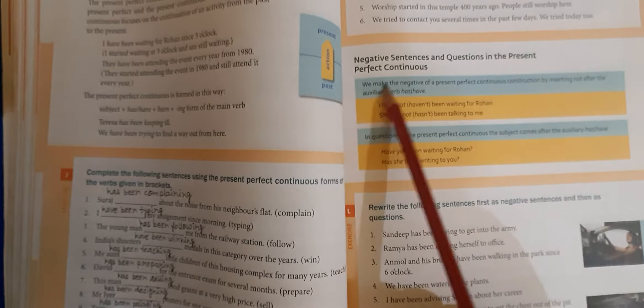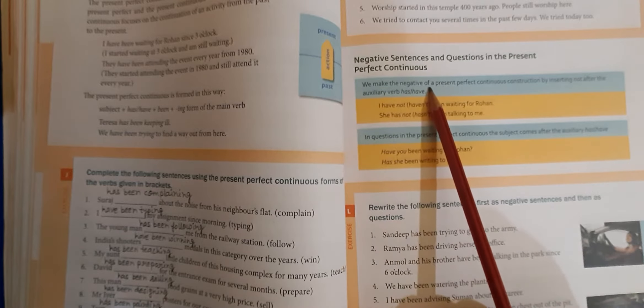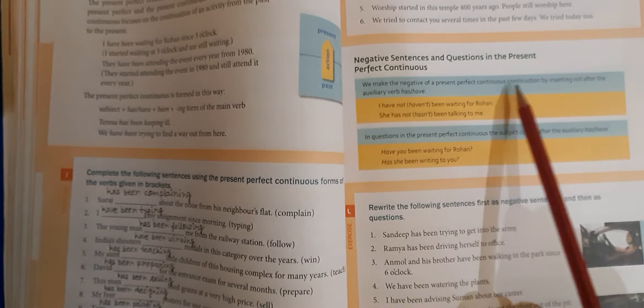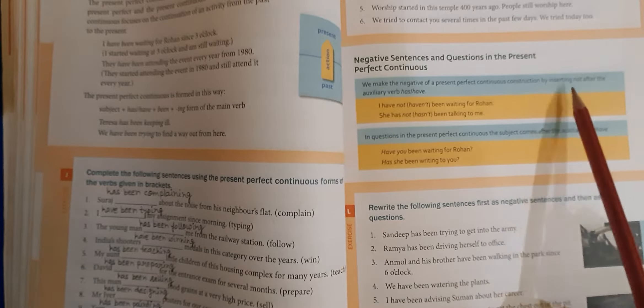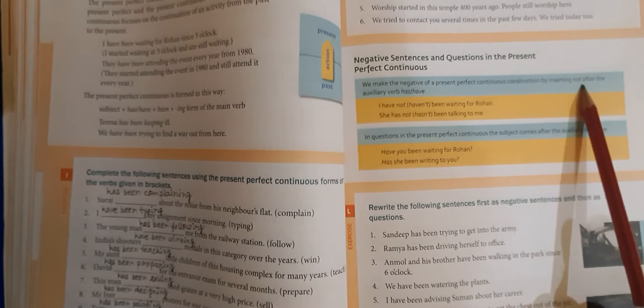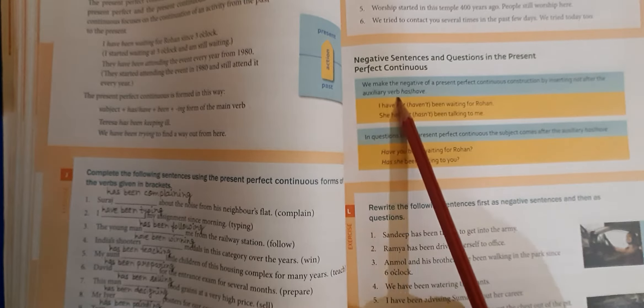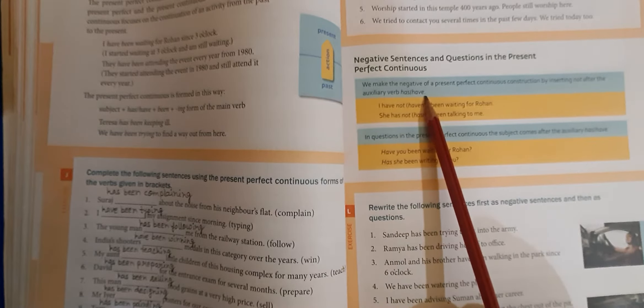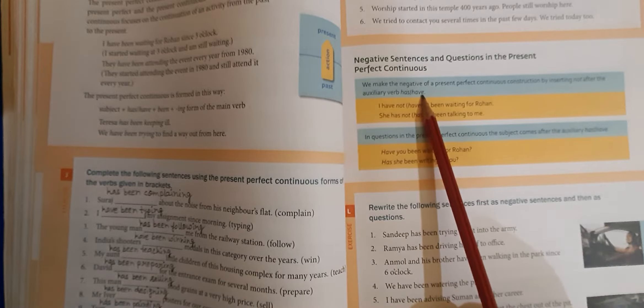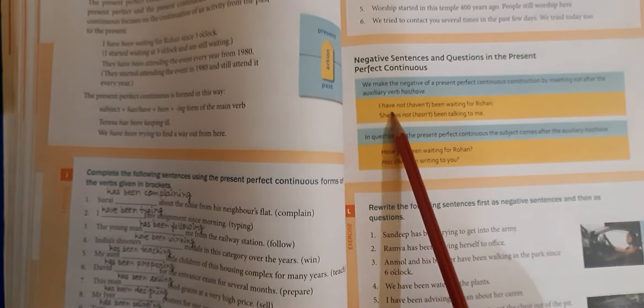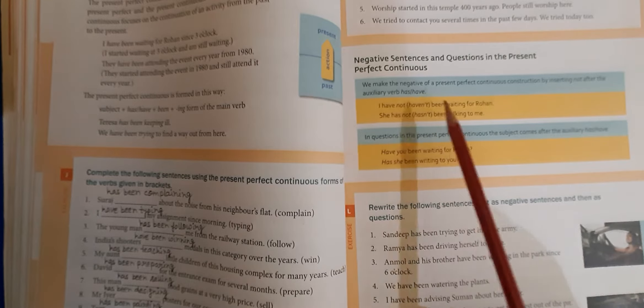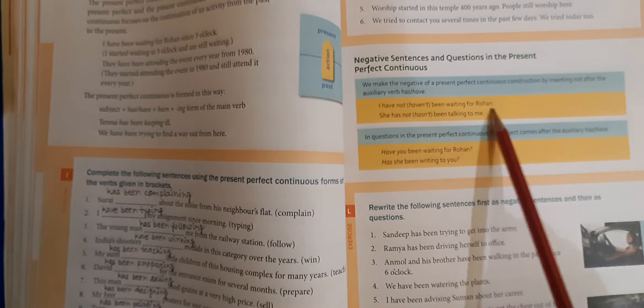Negative sentences and questions in the present perfect continuous. We make the negative of a present perfect continuous construction by inserting not after the auxiliary verb has or have. Example: I have not been waiting for Rohan.